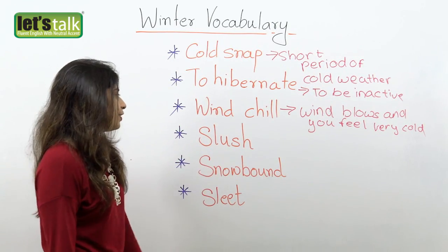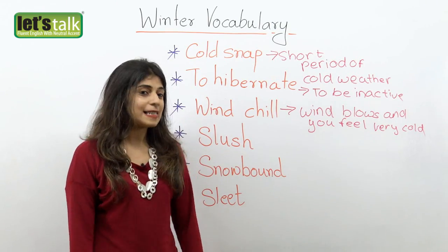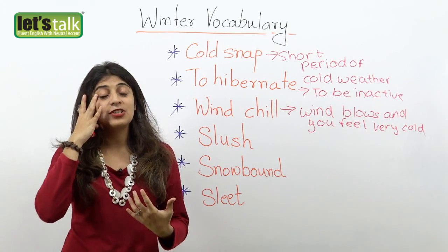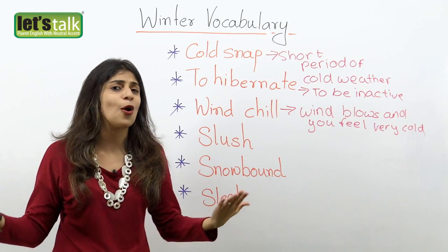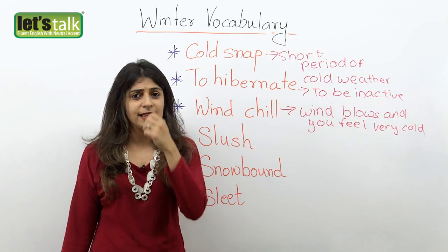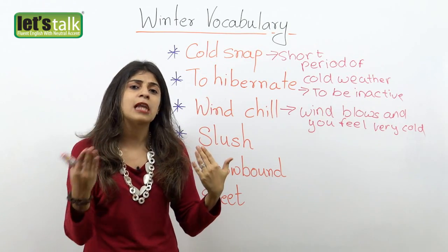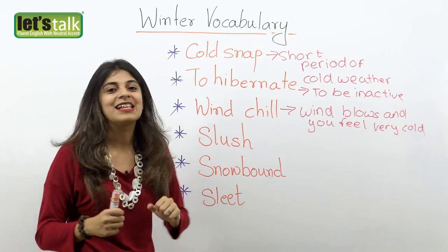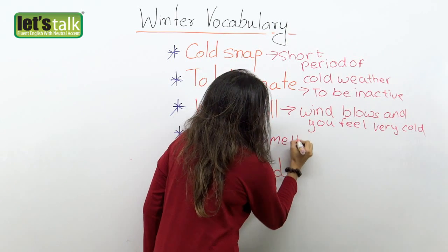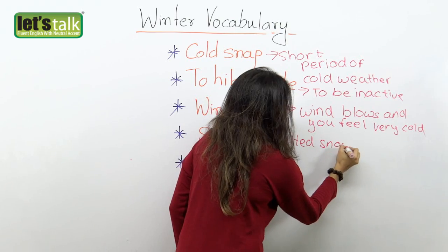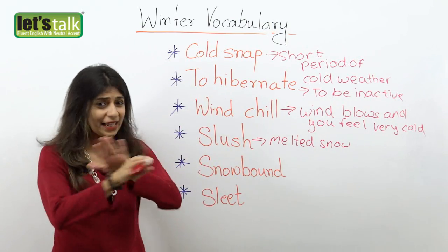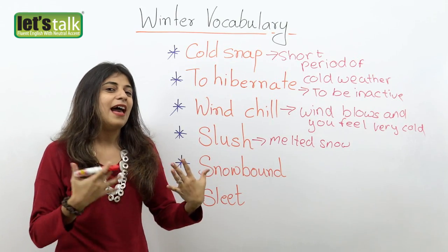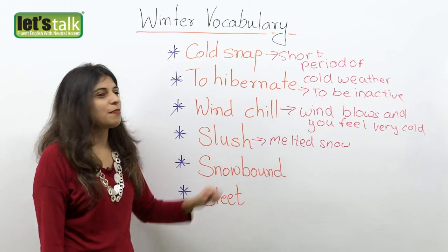Now let's have a look at another word: slush. I'm not talking about the drink — slush is the melted snow. When we do have a beautiful snowfall, everything looks so nice and pretty. But then after a few days when the temperature increases, the snow starts melting and it gets really dirty and mushy. So that melting snow is called slush. Honestly, I really don't like that — the melted snow looks dirty, it turns a little brown and looks very mushy.